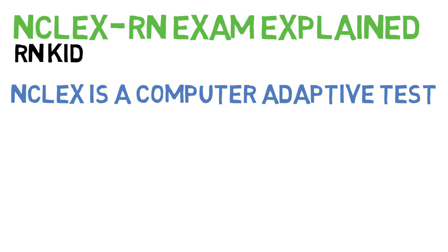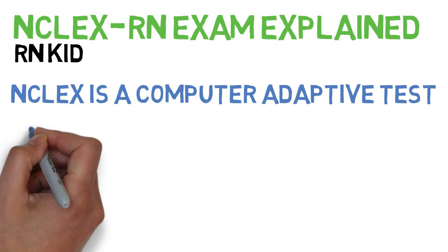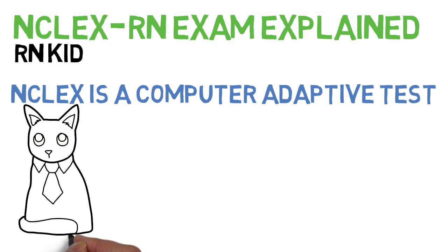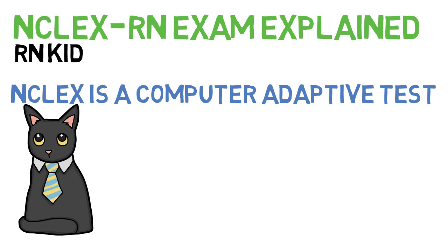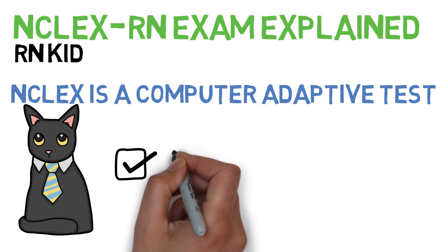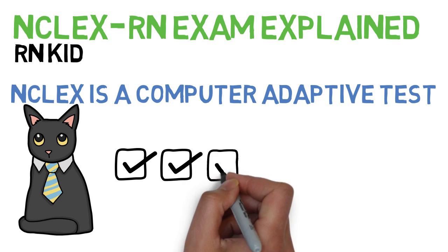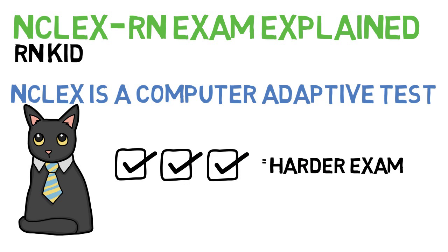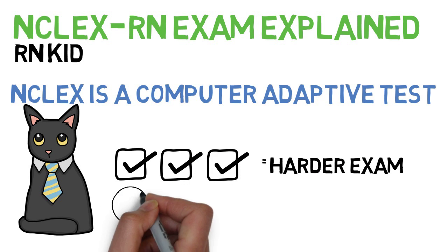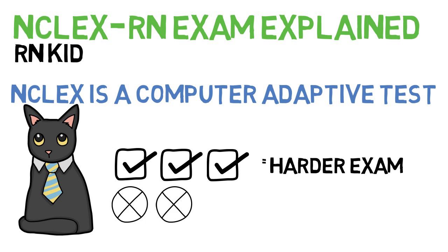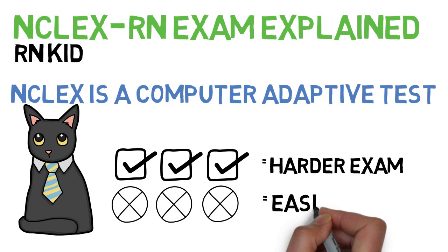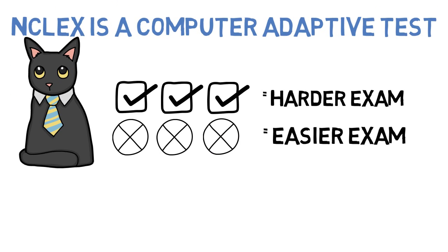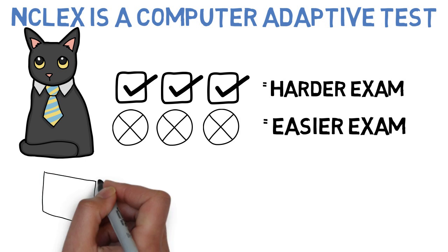The NCLEX is a computer adaptive test, also known as a CAT. This means that the test modifies itself based on how well or how poorly you are doing. The more questions you get correctly, the harder the exam questions get. The more questions you get incorrectly, the easier the questions get.